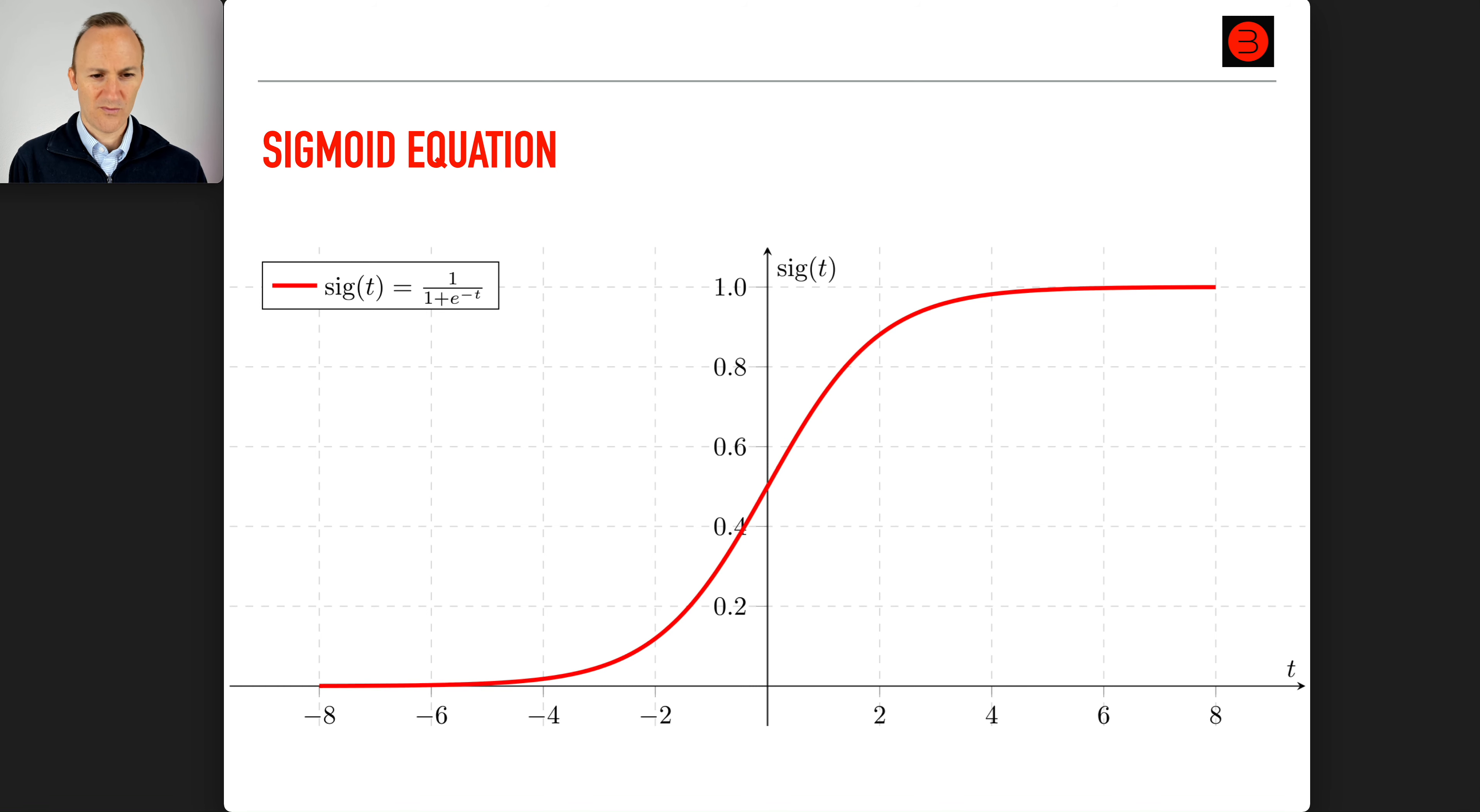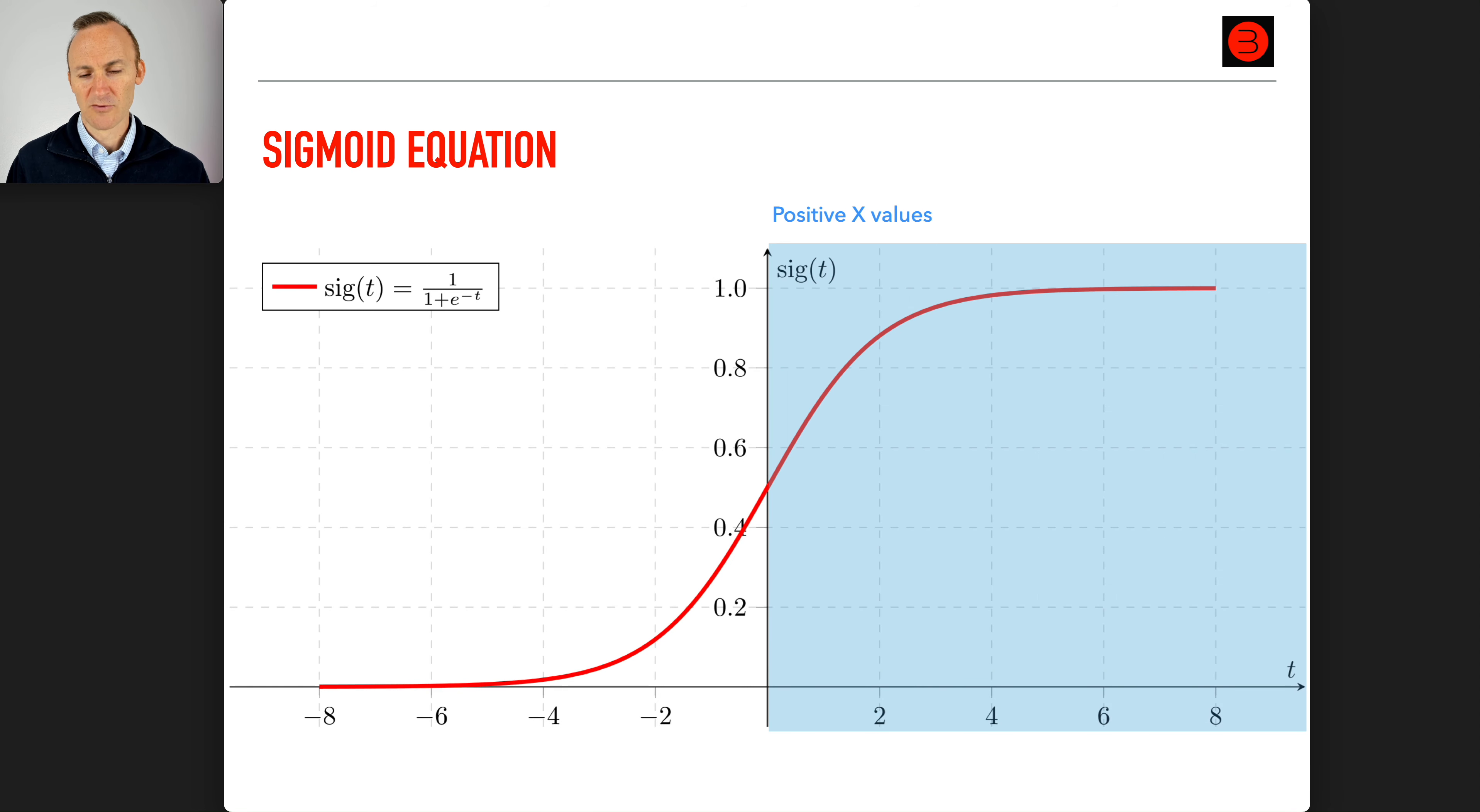E to the negative t is one over e to the t, so it's one over some gargantuan number, which makes e to the negative t become tiny, almost zero. A large value of t will reduce to one over one, which is one. A very negative value of t, like negative one million, gives you one over some huge number and it approaches zero. This is a really beautiful equation.